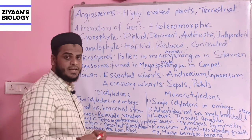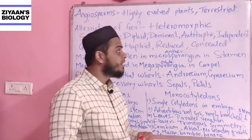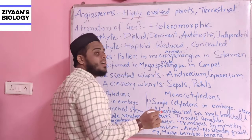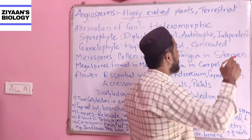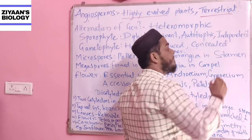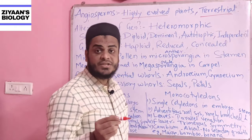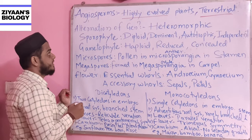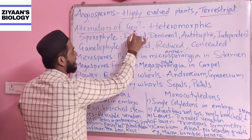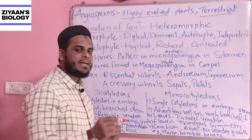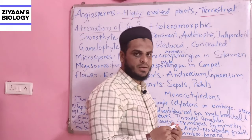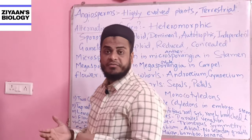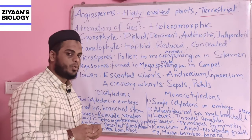We are dealing with division Angiosperm. The most highly evolved plants are none other than the members of Angiosperm. They are pure terrestrial plants. Alternation of generation is found in angiosperms as well — they deal with both the sporophyte phase and the gametophyte phase.